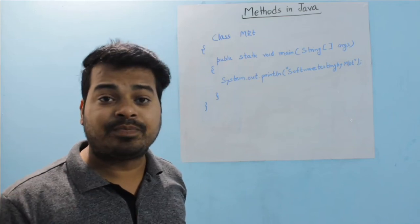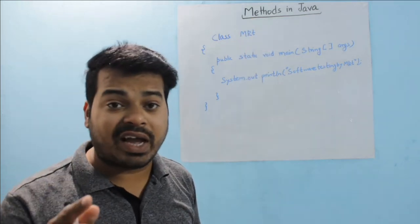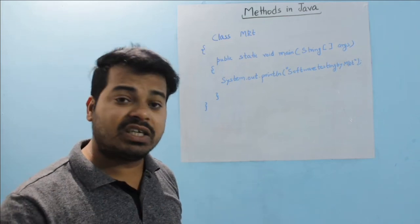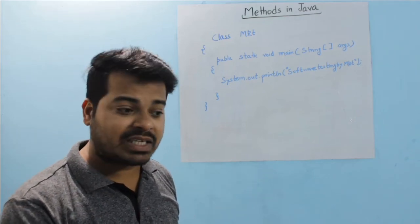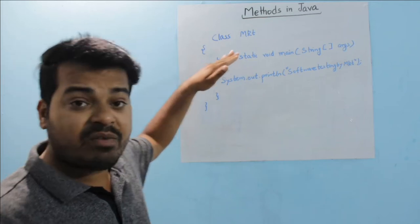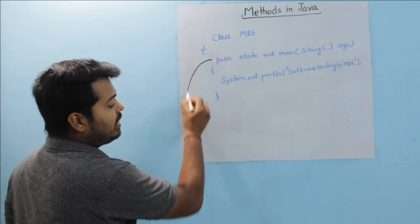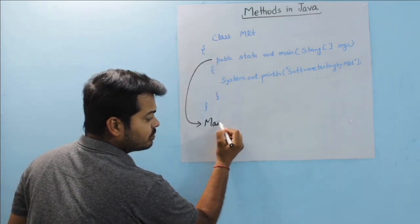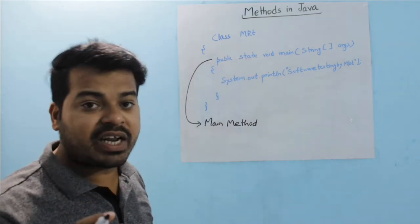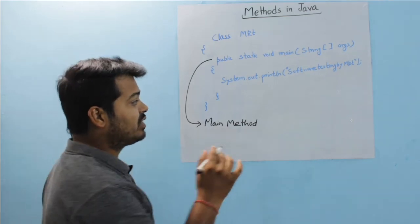If you remember my video on how Java internally works — link in the description — JVM is responsible for execution of your program. Whenever execution takes place, JVM will first call the main method. That is why, whenever you run any program in Java, your main method — 'public static void main' — will get executed first.